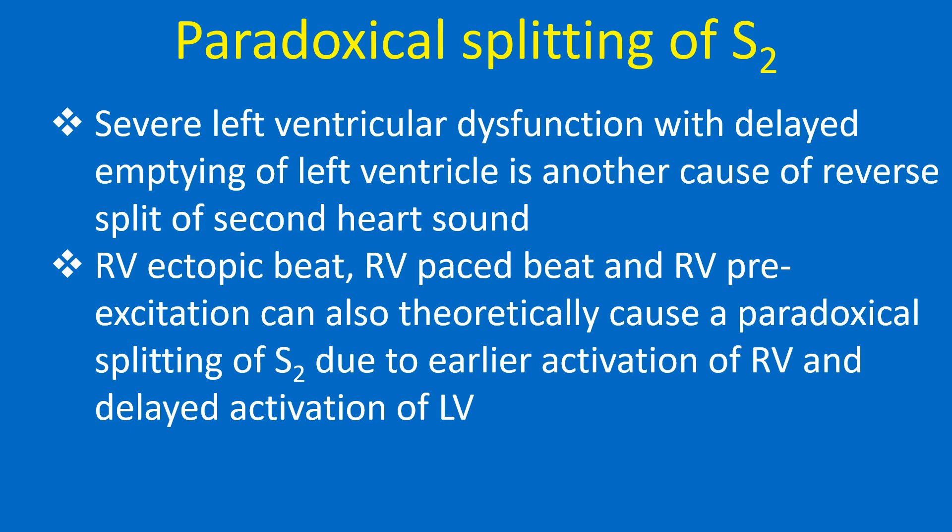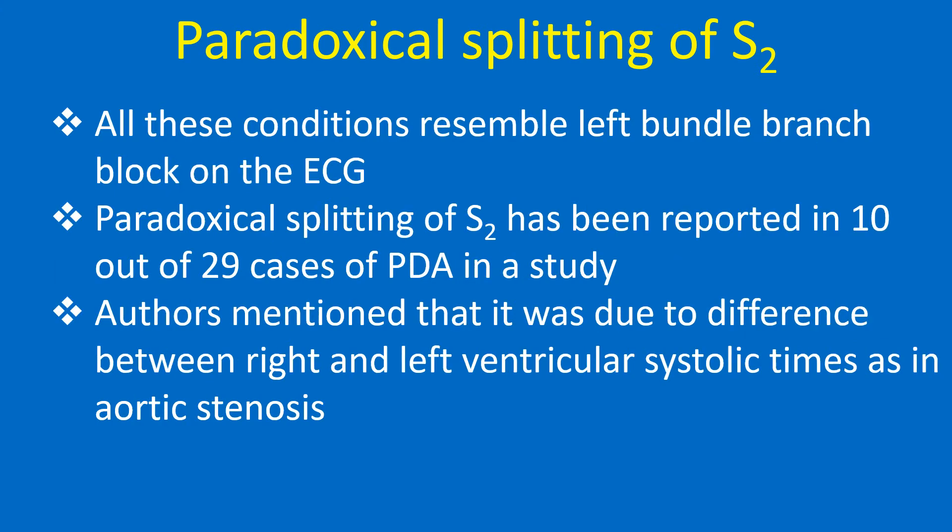Right ventricular ectopic beat, right ventricular paced beat, and right ventricular preexcitation can also theoretically cause paradoxical splitting of the second heart sound, due to earlier activation of the right ventricle and delayed activation of the left ventricle. All these conditions resemble left bundle branch block on the ECG.